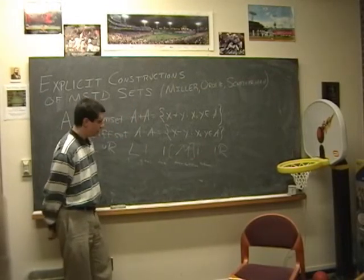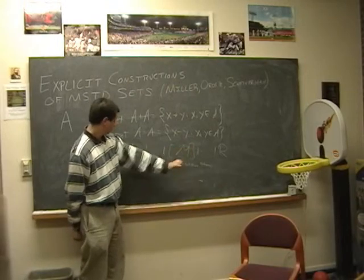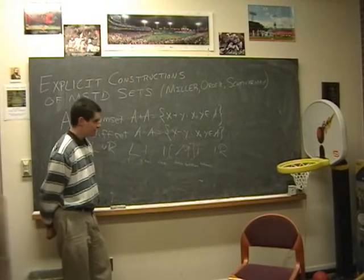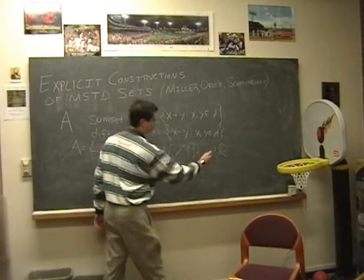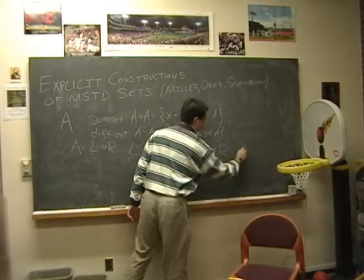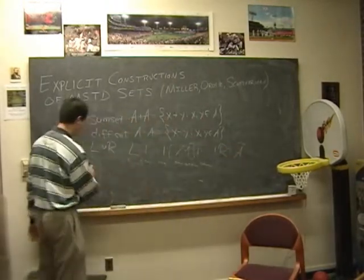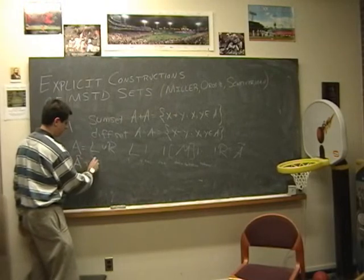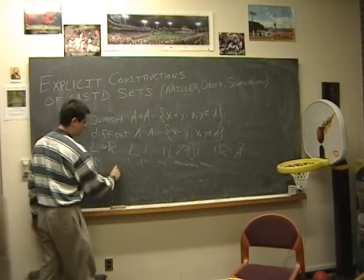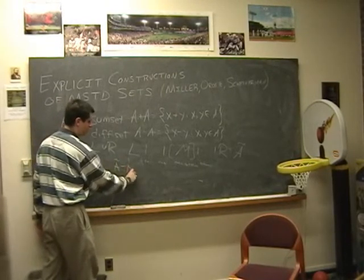What we want to do is choose our set M such that the number of sums we've added, and if we call this new thing A tilde, we can look at the sum set of A tilde, so A tilde plus A tilde, and we can look at the difference set, A tilde minus A tilde.